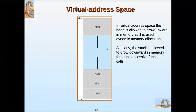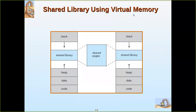In the virtual address space, the heap is allowed to grow upward in memory as used in dynamic memory allocation, while the stack grows downward through successive function calls. Virtual memory is also used for shared pages — for example, library code can be shared between two programs.